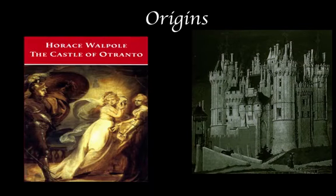Horace Walpole's The Castle of Otranto, published in 1764, is largely credited with kick-starting the English Gothic phenomenon. Full of lengthy, adjective-ridden descriptions that arguably diffuse rather than develop a feeling of horror, nevertheless the novel had an electrifying effect on its audience.